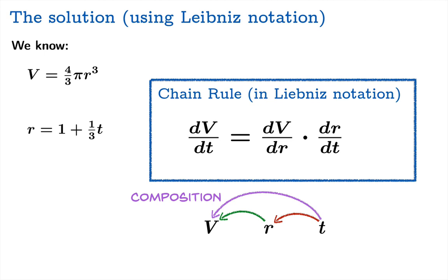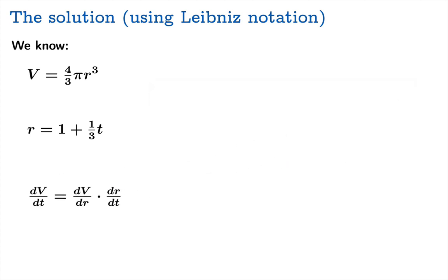So here's our chain rule. And to apply the chain rule, we need to know the time and the radius at a particular moment in order to plug those arguments into the appropriate formula. So that's really the name of the game here. So if v is four-thirds pi r cubed, then dv dr is four pi r squared. And if r is one plus one-third t, then dr dt is one-third.